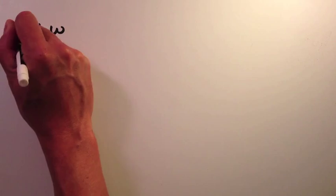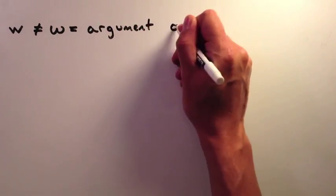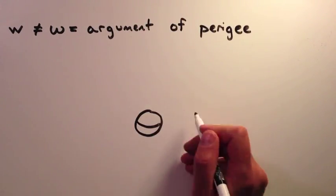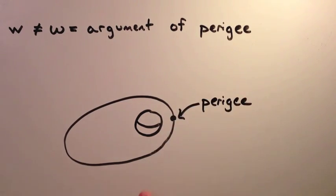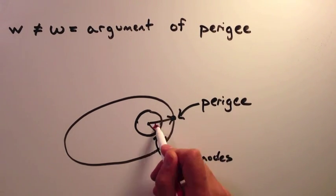The next parameter, ω, is little omega, not w. This one is called the argument of perigee. Remember that perigee means the point at which the satellite is closest to the Earth. The argument of perigee is the angle from the line of nodes to the satellite position vector at perigee.